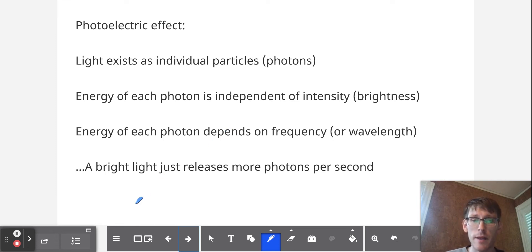A bright light that's more intense will just have more photons per second, but if none of those photons has enough energy to ionize a metal, then the metal won't ionize, no matter how bright the light is, no matter how many photons are being shot at it per second.